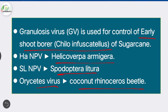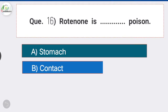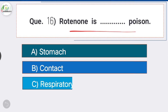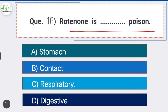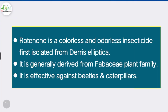Question 16: Rotenone is a respiratory poison. It is a colorless and odorless insecticide first isolated from Derris elliptica. It is generally derived from derris plant family and is effective against beetles and caterpillars.